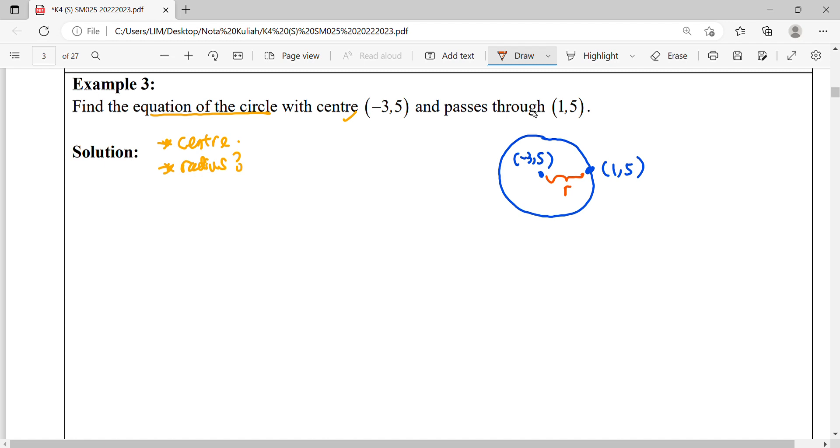So radius can be found by using the concept distance between two points formula: square root of x1 minus x2 square plus y1 minus y2 square.